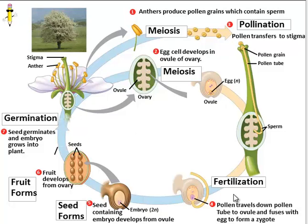Now fertilization can occur — the sperm can fuse with the egg inside the ovule. And now something really cool happens: that ovule containing a fertilized egg is going to develop into a seed. And that fertilized egg — that zygote — is going to develop into an embryo. So when you eat seeds, you're really eating plant embryos encased in a protective coat.